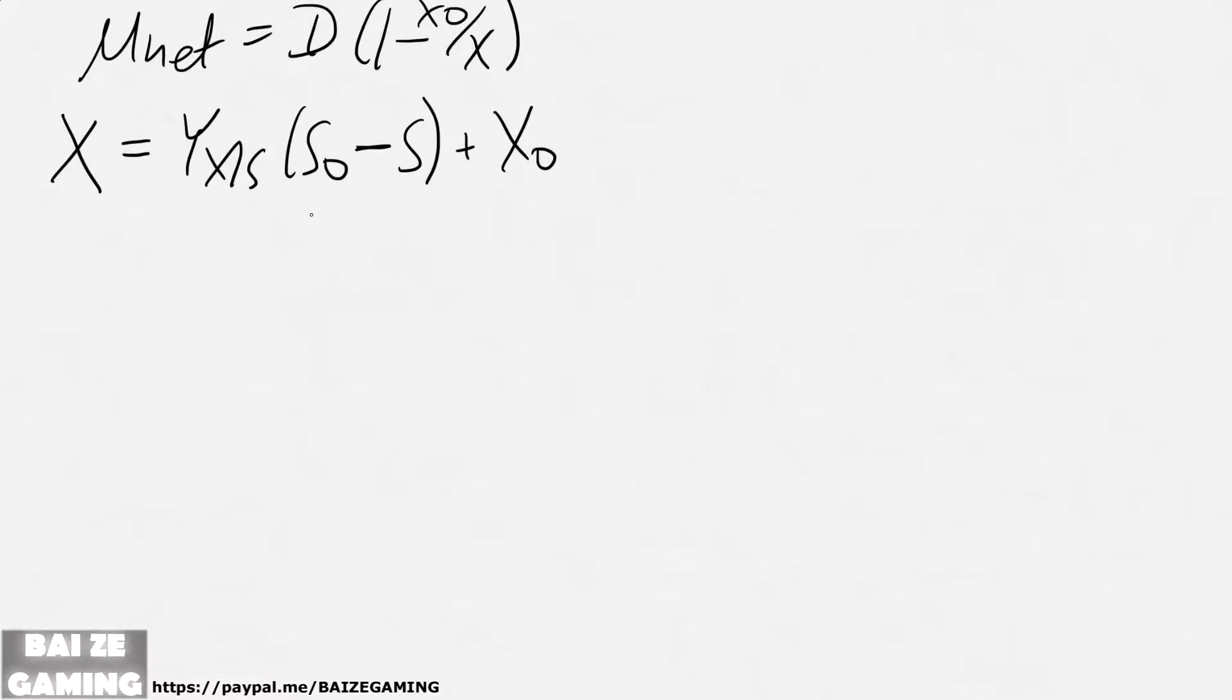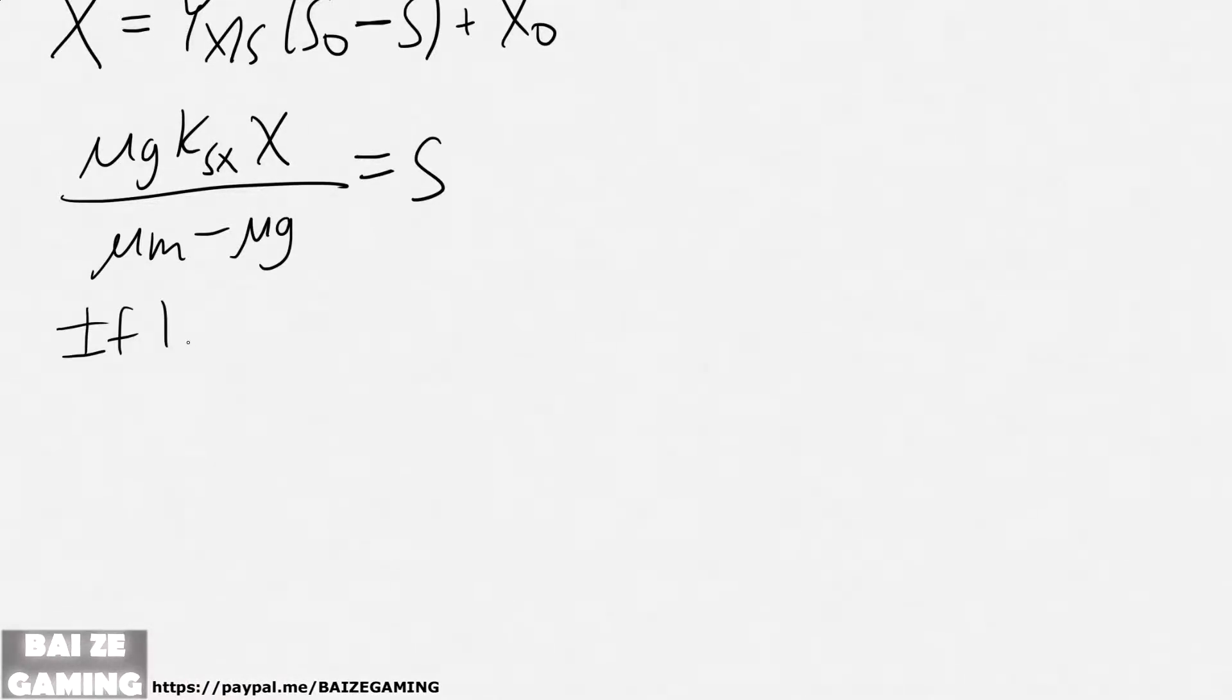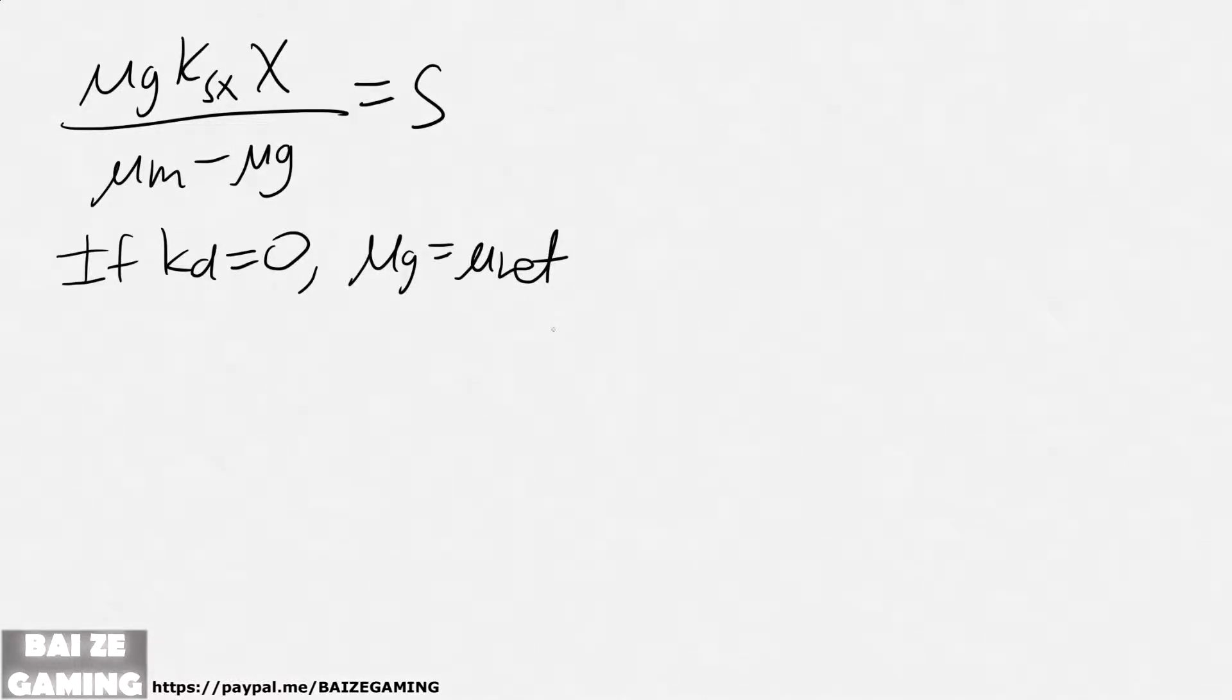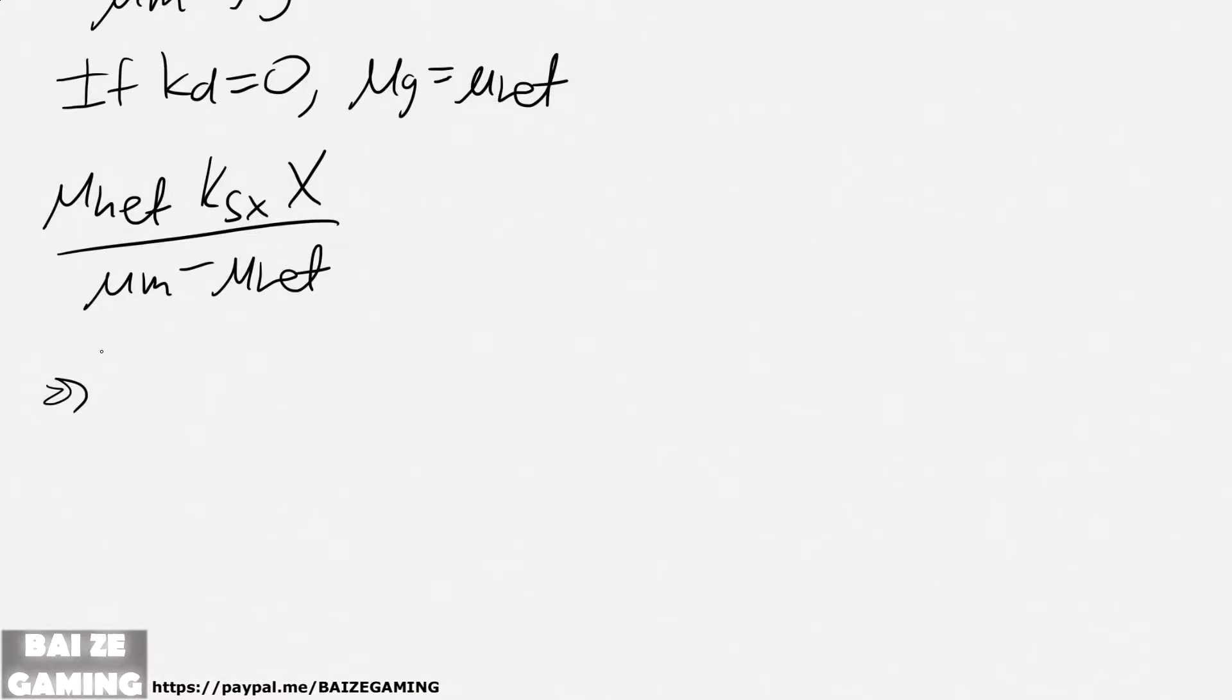So now what you can actually do is we had before this. So we got this, I'm just rearranging the Contois equation. And if kd equals zero, we'll get μg equals μₙₑₜ, so then we can just replace those μgs with μₙₑₜ. And then we replace those with the Ds.